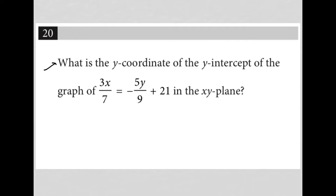So this question says, what is the y-coordinate of the y-intercept of the graph of 3x over 7 equals negative 5y over 9 plus 21 in the xy-plane? All right.